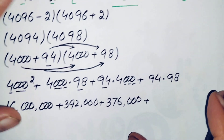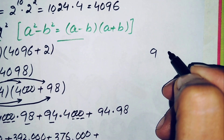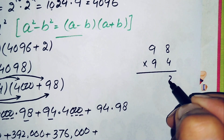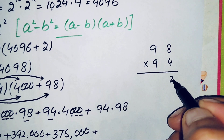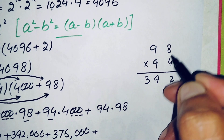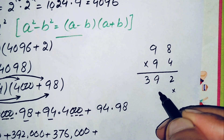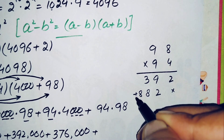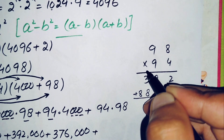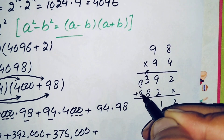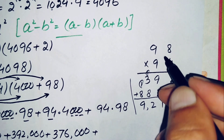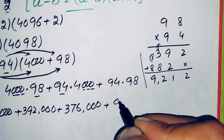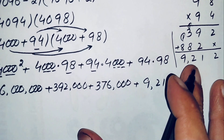Now we multiply 98 times 94 in rough work. 4 times 8 is 32, carry 3; 4 times 9 is 36, plus 3 is 39. Then 9 times 8 is 72, carry 7; 9 times 9 is 81, plus 7 is 88. Adding these: 2; 9 plus 2 is 11, carry 1; 3 plus 1 is 4, plus 8 is 12, carry 1; 8 plus 1 is 9. So 98 times 94 equals 9212.